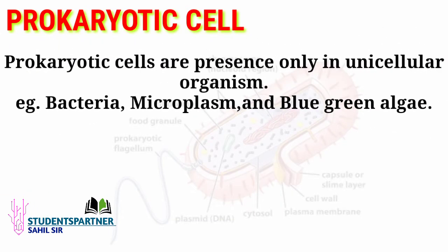Prokaryotic cells are found in only three types of organisms: bacteria, mycoplasma, and blue-green algae. These are the three examples of prokaryotic cells.